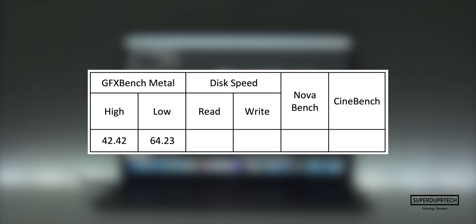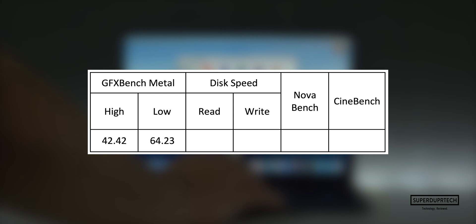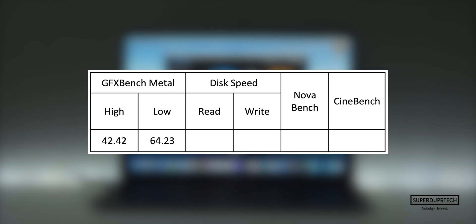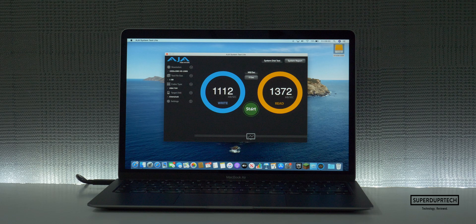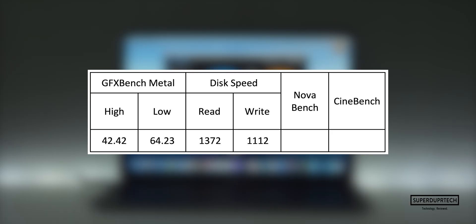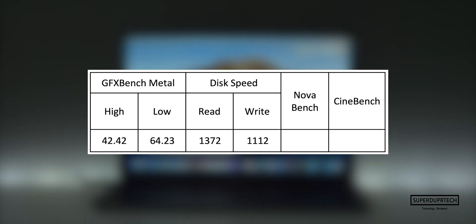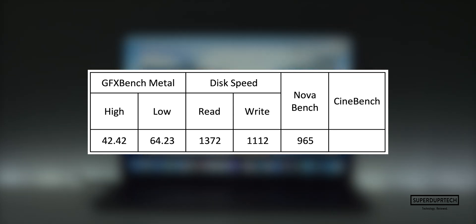Next I ran an internal SSD speed test and got a read speed of 1372 megabytes per second and a write speed of 1112 megabytes per second. Next up we have NovaBench, which is a good general benchmark as it tests not only the CPU and GPU but also the storage and system memory. With this test I got a score of 965.